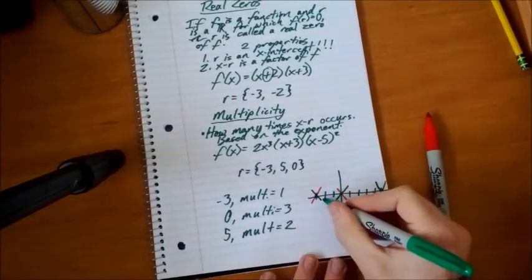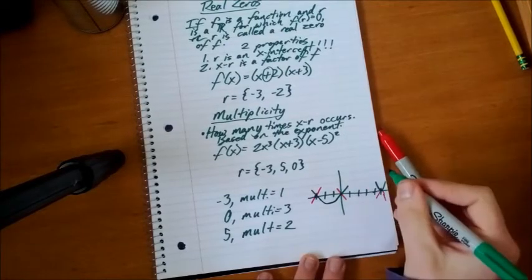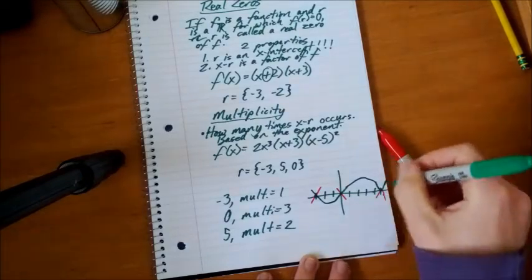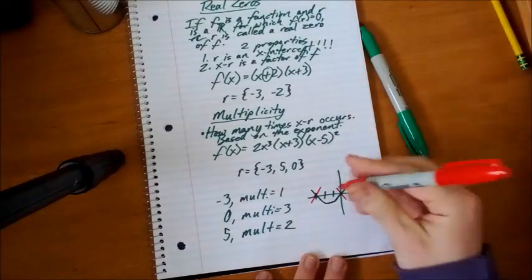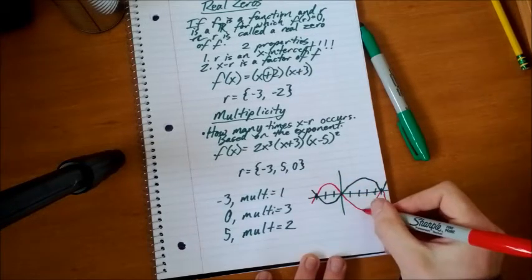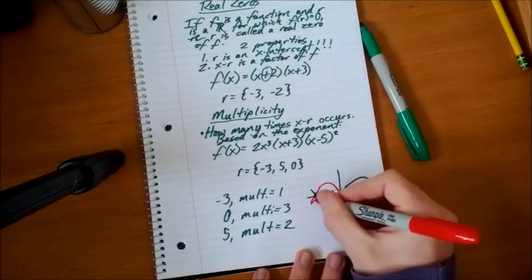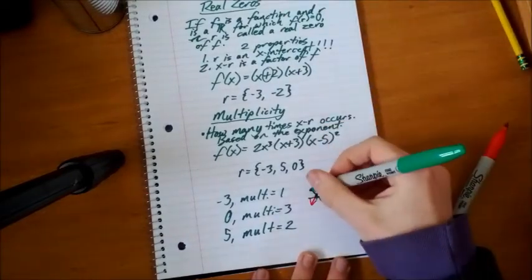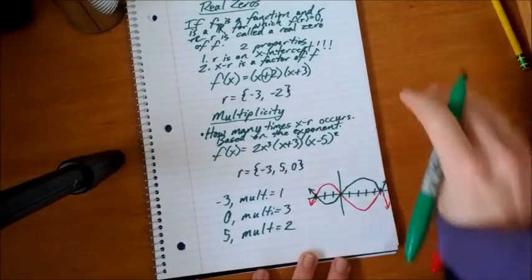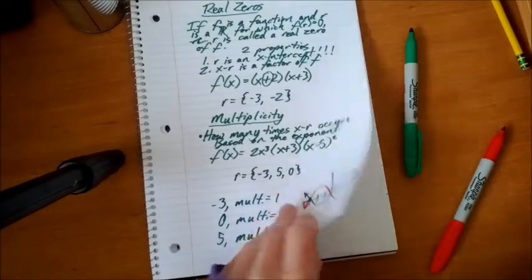So our graph will either look like the green graph, which will be something like this, that touches there and bounces off, or it will look like the red graph, something like this, where it goes whoop and down off into infinity, and maybe even beyond. To infinity and maybe beyond, as Buzz Lightyear would say.